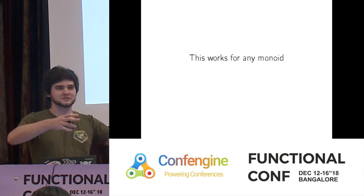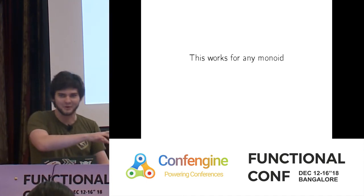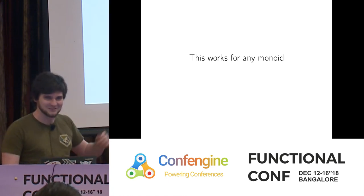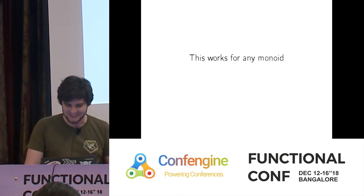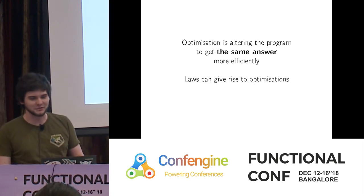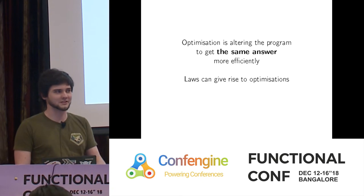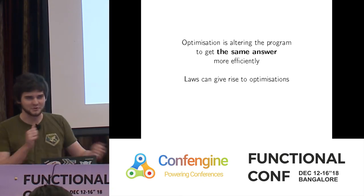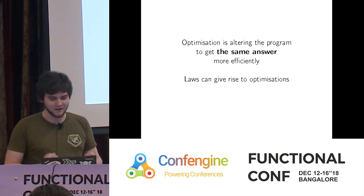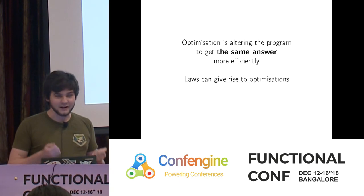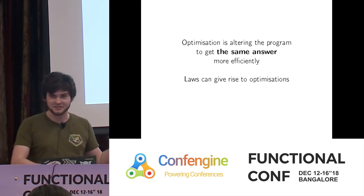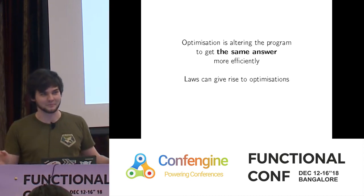There are similar structures to DList that work for other abstractions beyond Monoids — a whole family of tricks to say 'it's faster if it's right-associated, just right-associate everything for me.' Optimization is altering a program to get the same answer more efficiently. If you alter the program and get a different answer, you've written a different program. Laws are all about changing in such a way that you get the same answer — so naturally laws can give rise to optimizations.